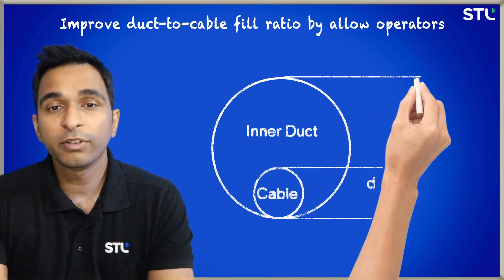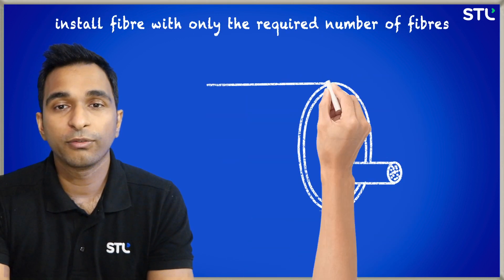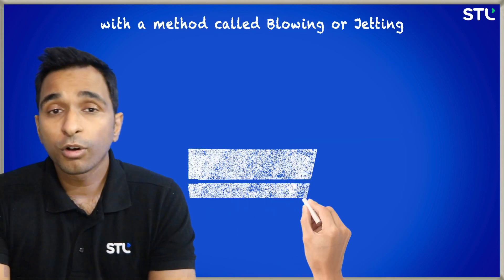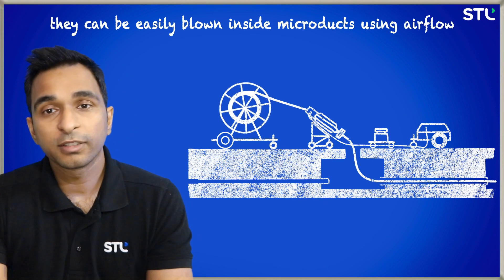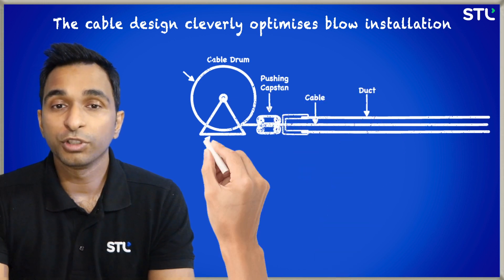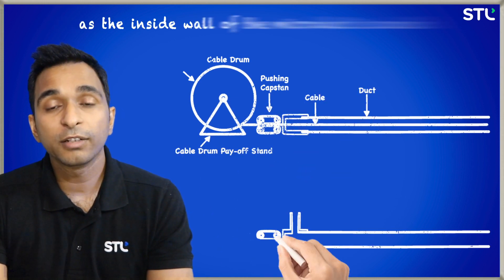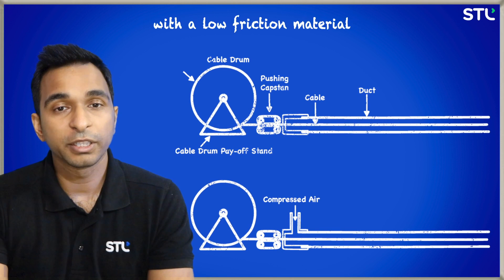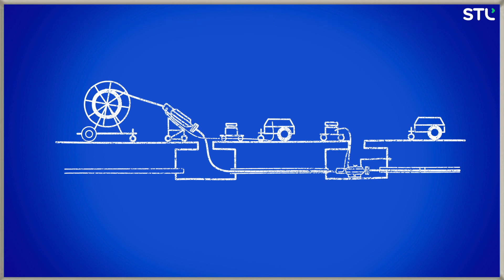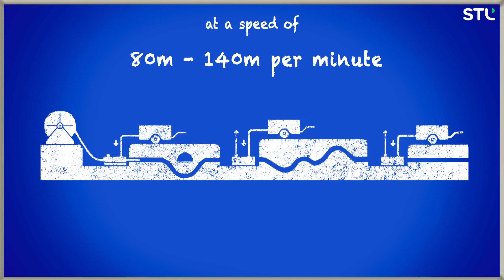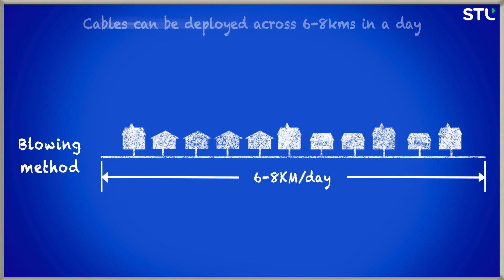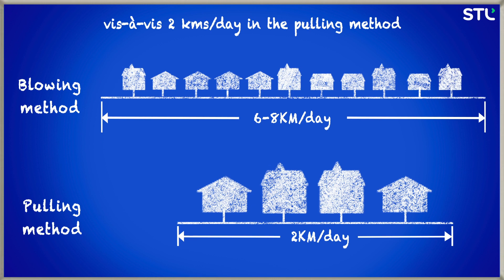They improve duct-to-cable fill ratio by allowing operators to install fiber with only the required number of fibers. With the method called blowing or jetting, they can be easily blown inside micro ducts using airflow. The cable design cleverly optimizes blow installation as the inside wall of the micro duct is coated with low friction material. This results in fast blowing of these lightweight cables at a speed of 80 to 140 meters per minute. Cables can be deployed across 6 to 8 kilometers in a day, versus 2 kilometers per day with the pulling method.